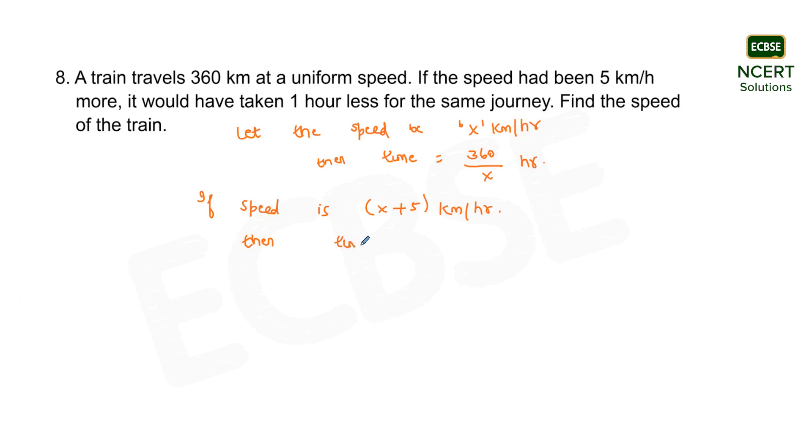Now, time taken by the train for the same journey will be 360 by x plus 5 hours, right? That is, this will be the time taken by the train if its speed has been increased by 5 as it was before.